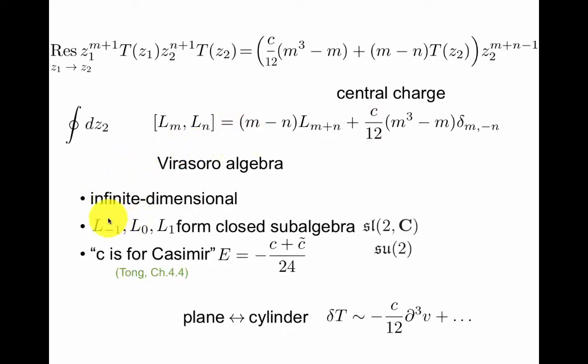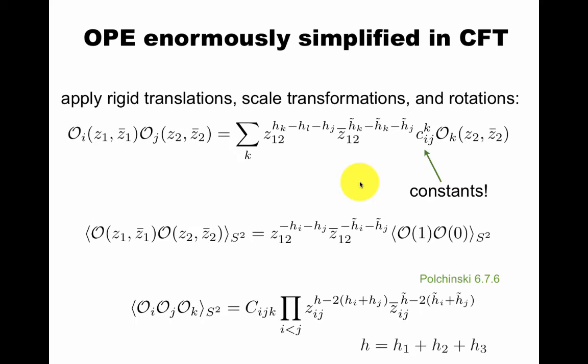So the central charge term is the extra term compared to what we had before in the Witt algebra. The algebra is infinite dimensional, as we already commented. You notice that l minus 1, l0, and l1 form a closed subalgebra. In physics, often written capital. In mathematics, often with sl2 like this. And this c, you can think of physically as a Casimir energy. It stands for central charge, but Tong says c is for Casimir, to help you remember that this can be thought of as a Casimir energy associated with finite size going from the plane to the cylinder. The transformation of t not being conformal primary transforms with an extra anomalous term, and this is controlled by this coefficient c.